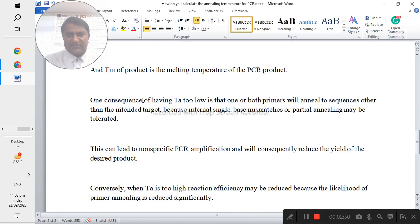One consequence of having the Ta too low is that one or both primers will anneal to sequences other than the intended target, because internal single-base mismatches or partial annealing may be tolerated. This can lead to non-specific PCR amplification and will consequently reduce the yield of the desired product.